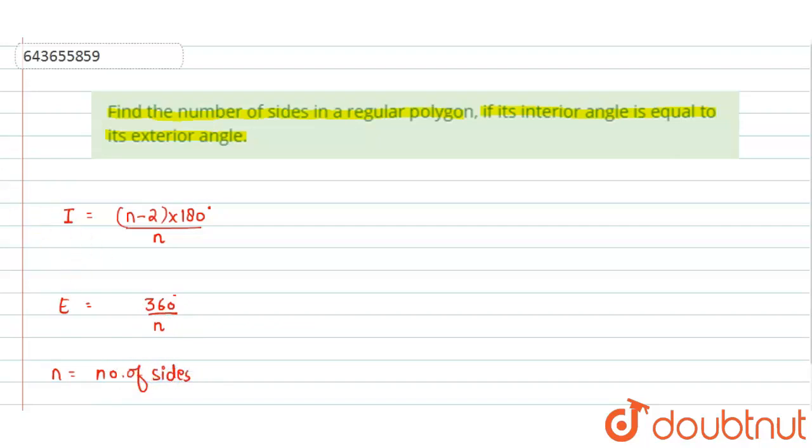So here it is given that the interior angle is equal to the exterior angle. So what we will do is just equate these two expressions. Interior angle is equal to exterior angle.